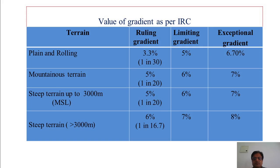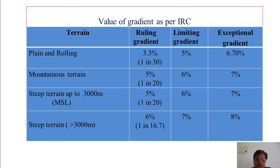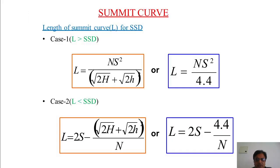As per IRC, gradient values depend upon the terrain. For plain terrain: ruling gradient 3.3%, limiting gradient 5%, exceptional gradient 6.7%. For mountainous terrain: 5% (1 in 20), 6%, and 7%. For steep terrain up to 3000 m MSL: 5% (1 in 20), 6%, and 7%. For steep terrain above 3000 m MSL: 6%, 7%, and 8%. You need to remember the values of both ruling and limiting gradients.